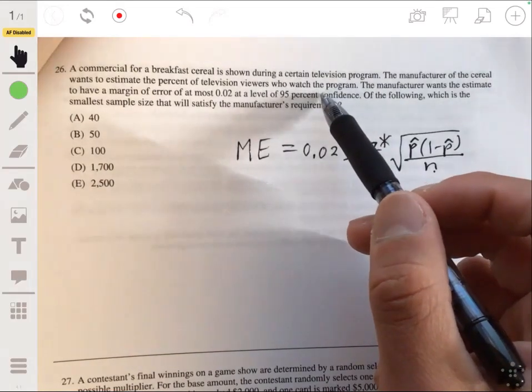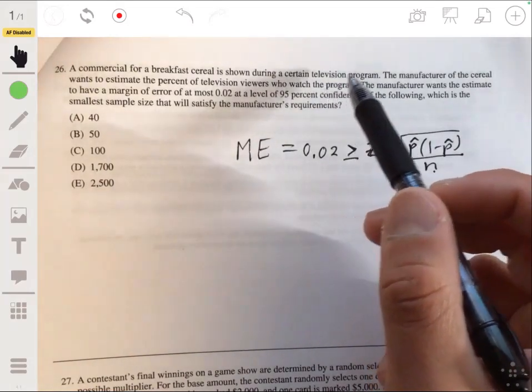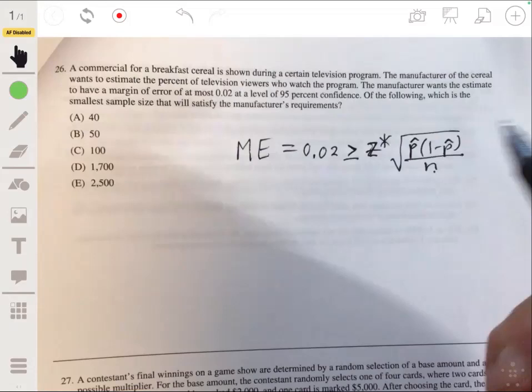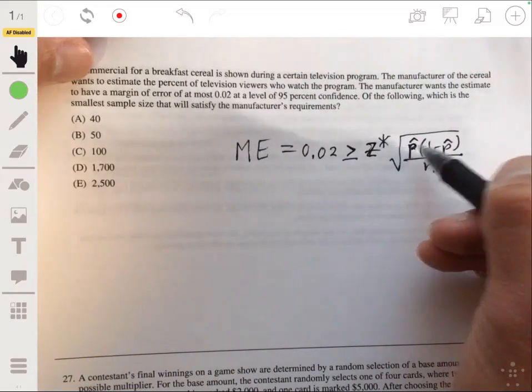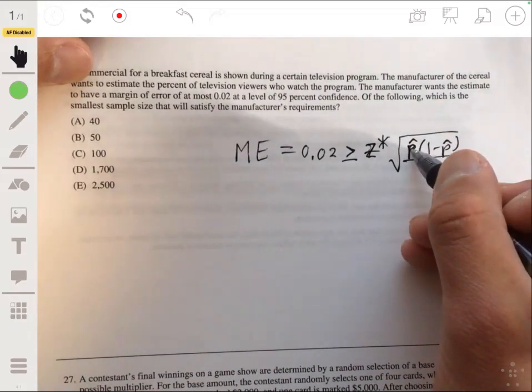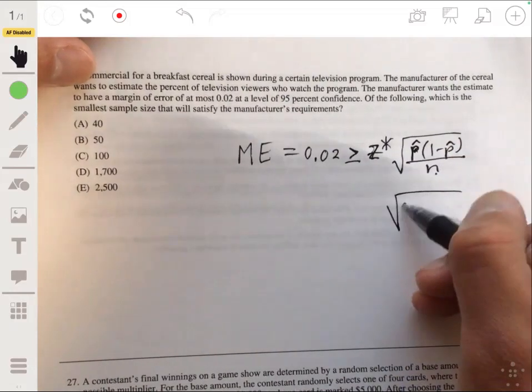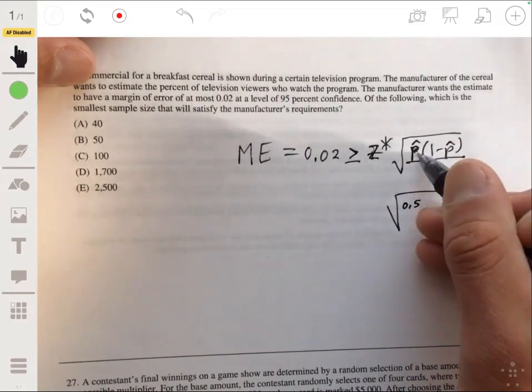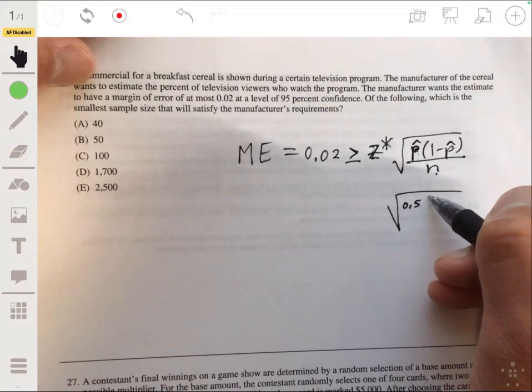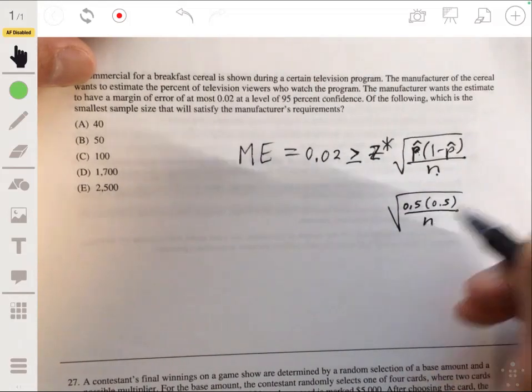Now we're not given any like previous studies, so no values for the sample proportion. So when you're not given any previous studies or anything, you're going to set p hat to be 0.5. So you have 0.5 times 1 minus 0.5, or 0.5 times 0.5, over n, and your z star,